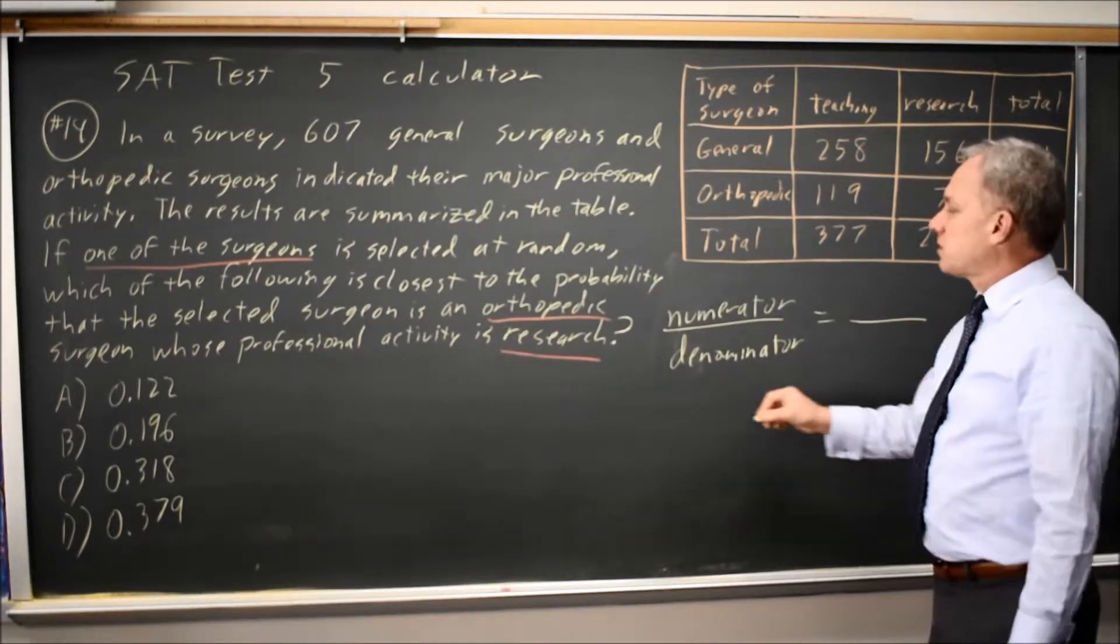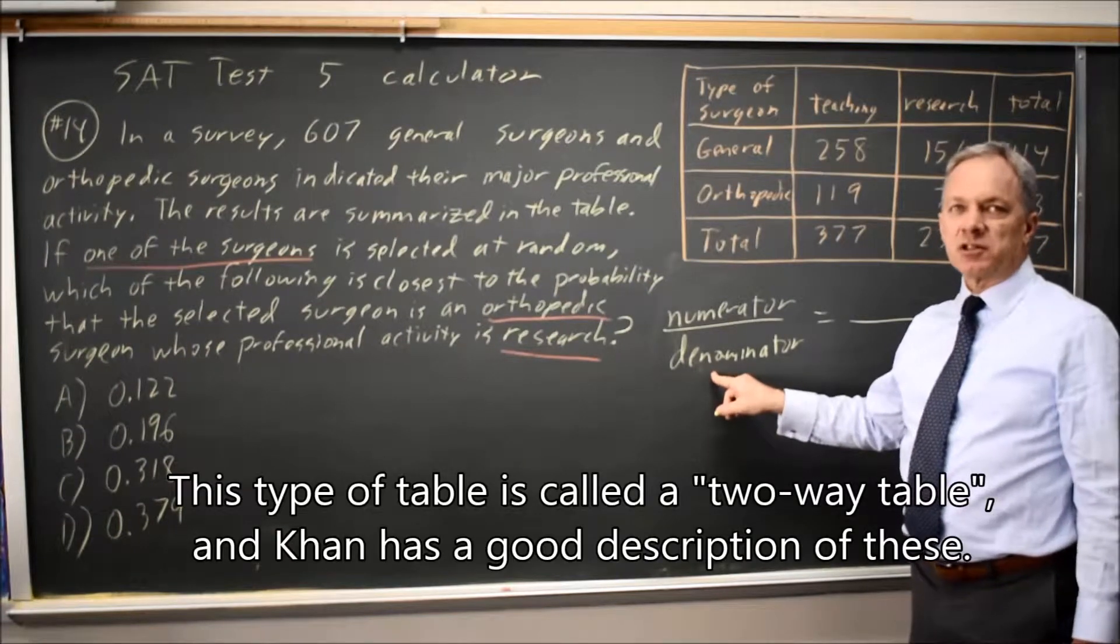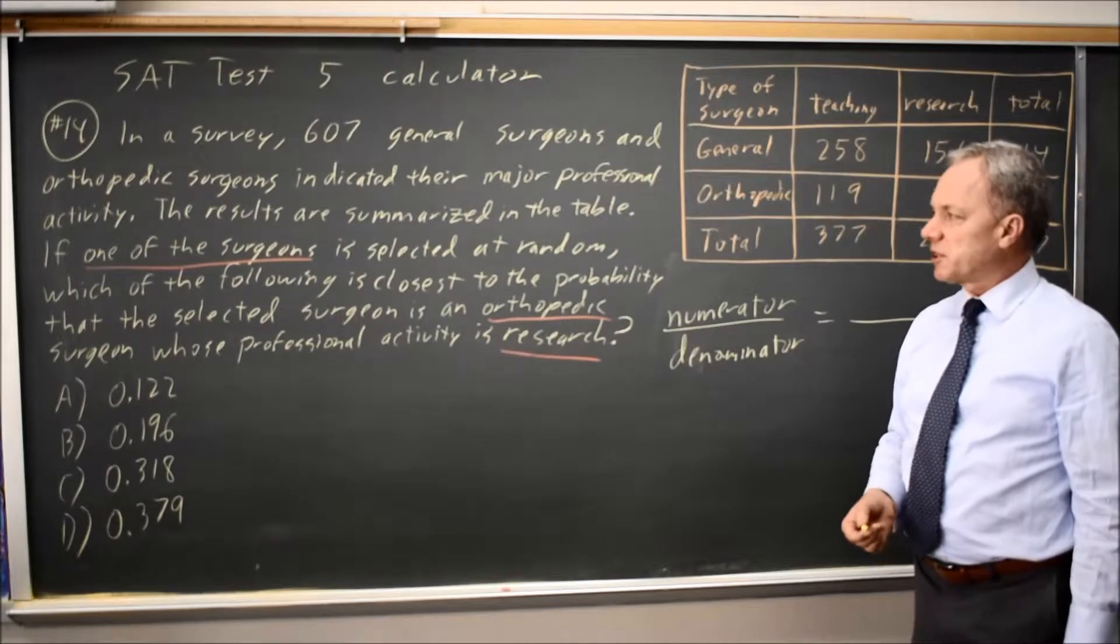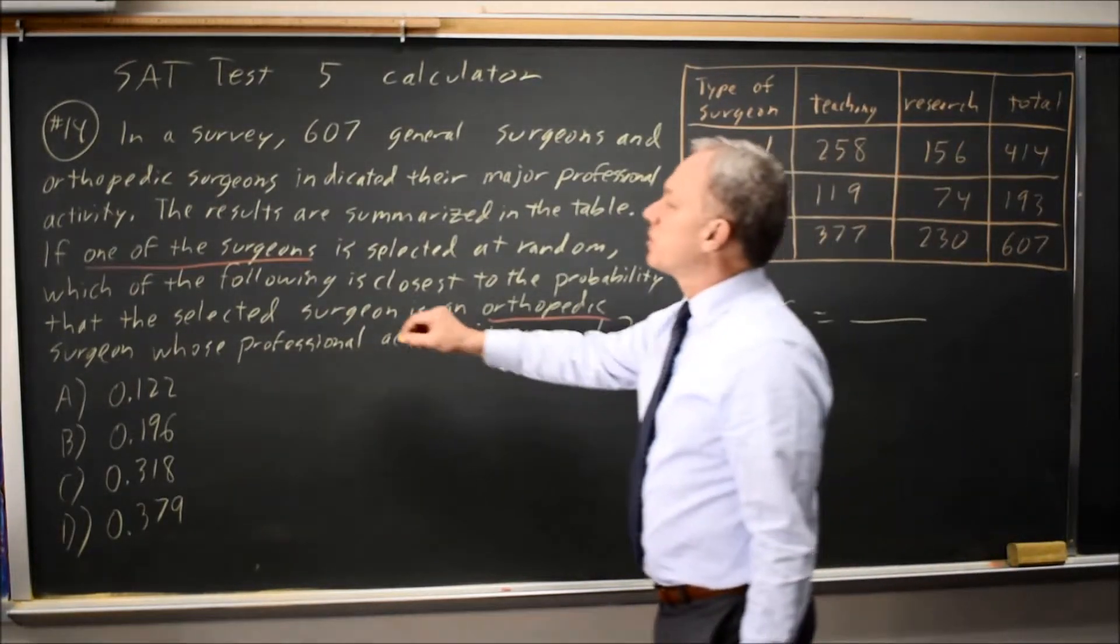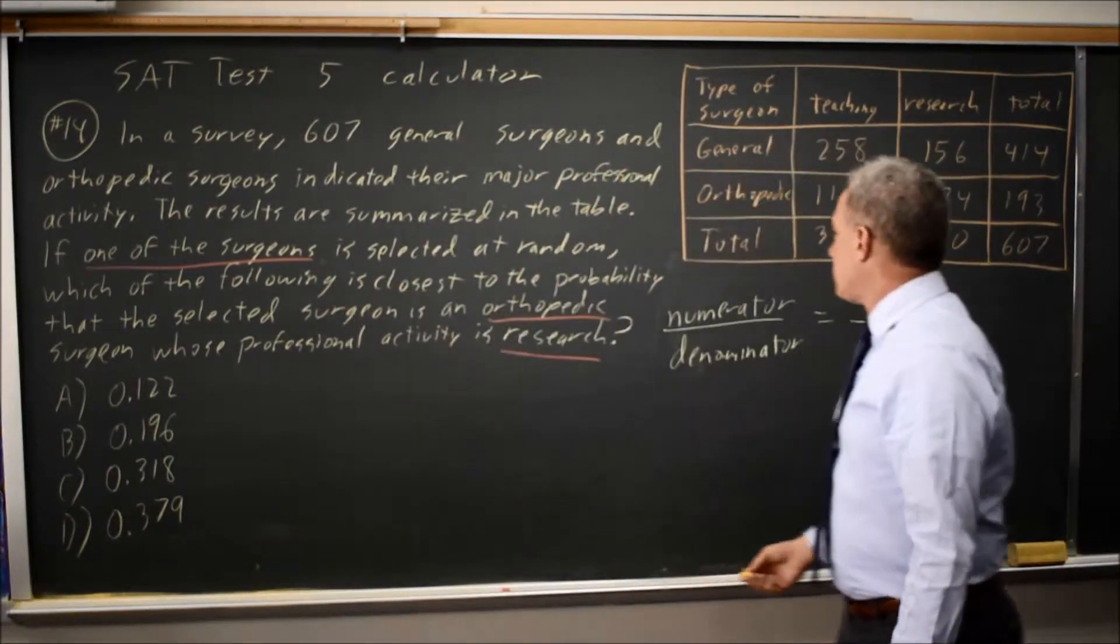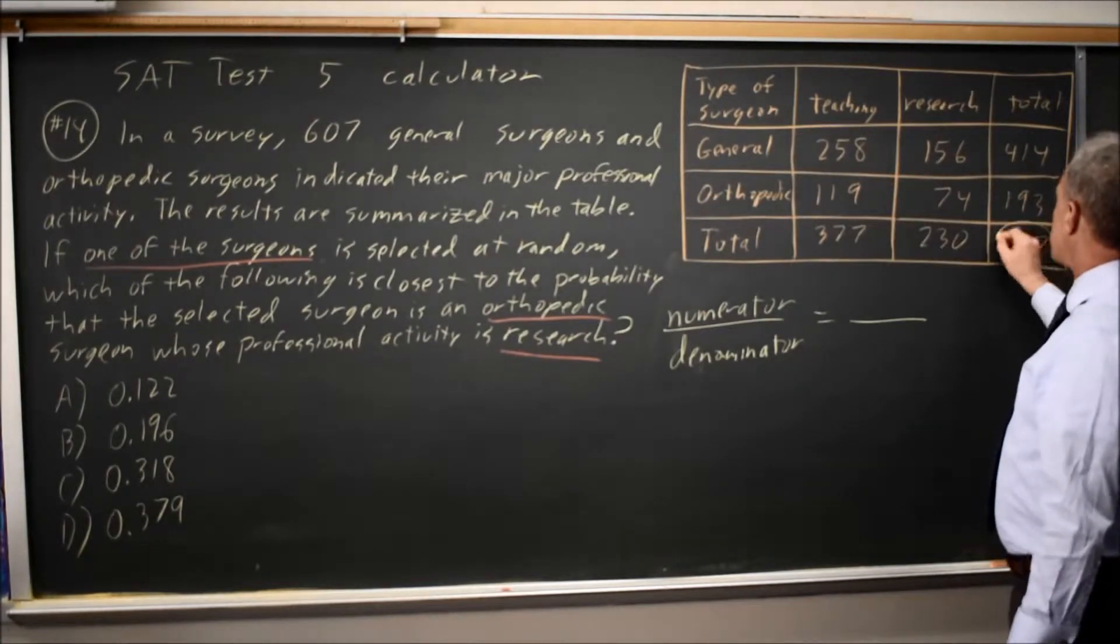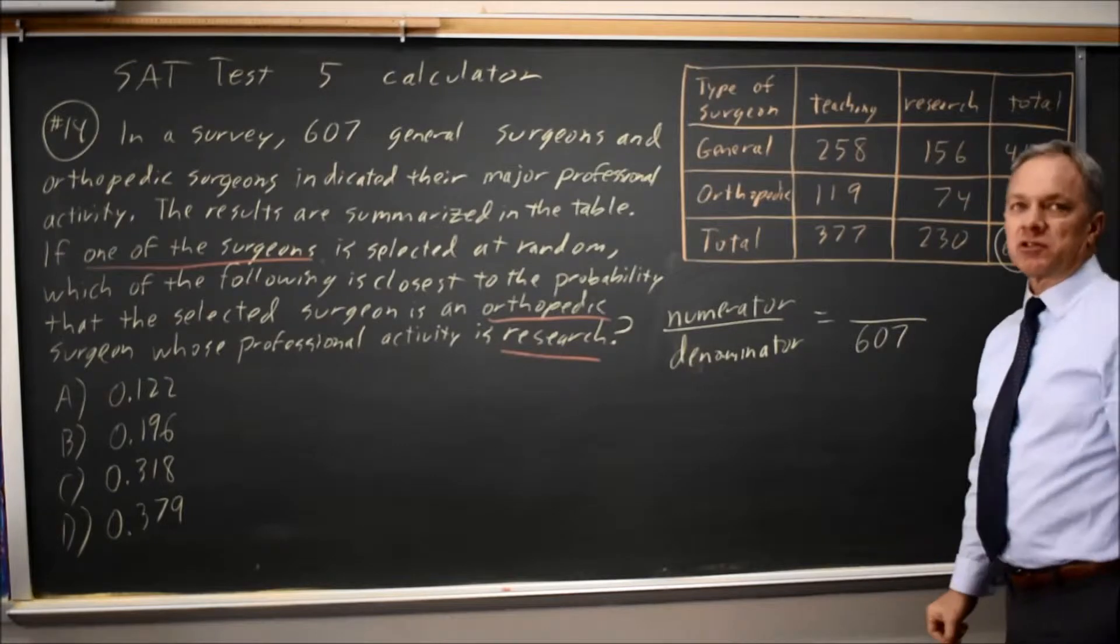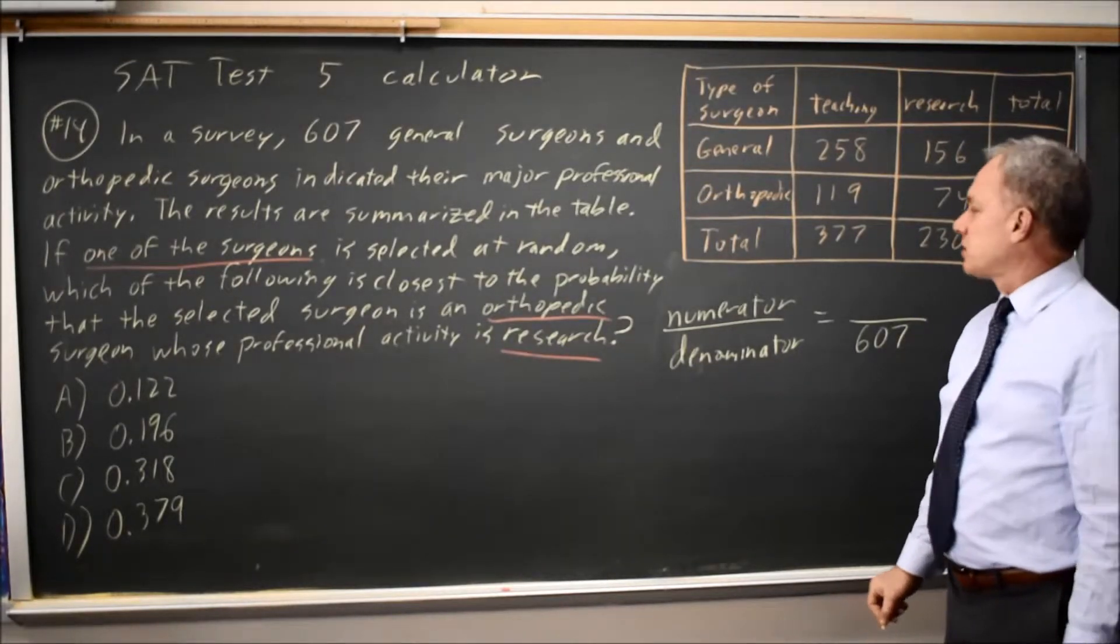The first question is always, what is the denominator? How many individuals could have been selected from the group where you're making a random selection? Here they said we've selected one of the surgeons, and everybody is a surgeon, so that would be the total for the entire table. Our denominator is 607 individuals who are surgeons, any of whom might have been selected.